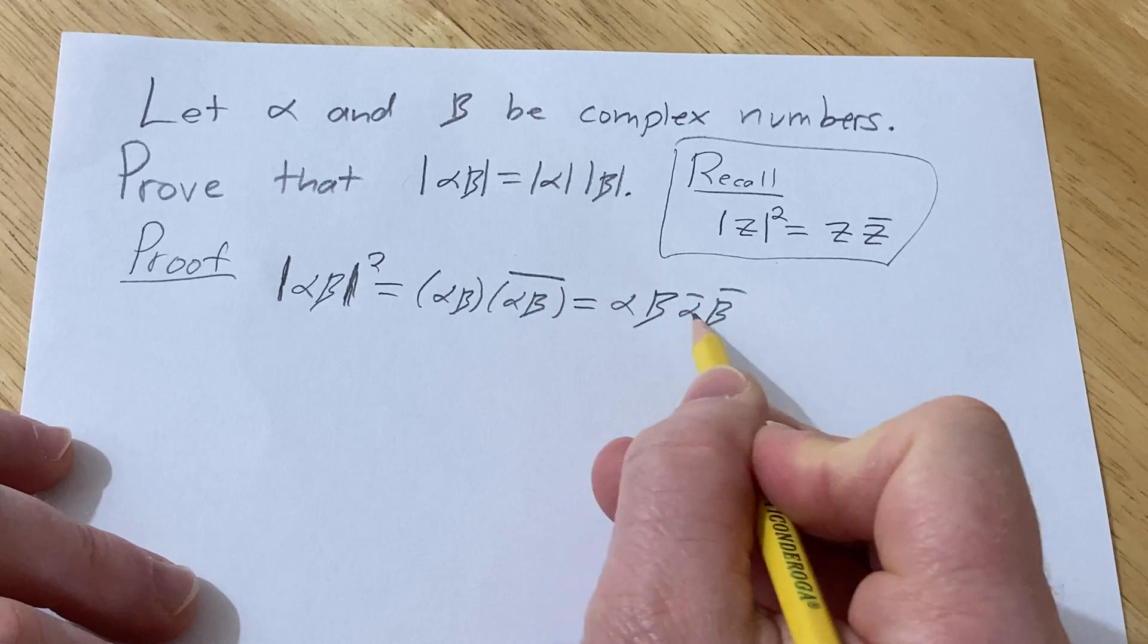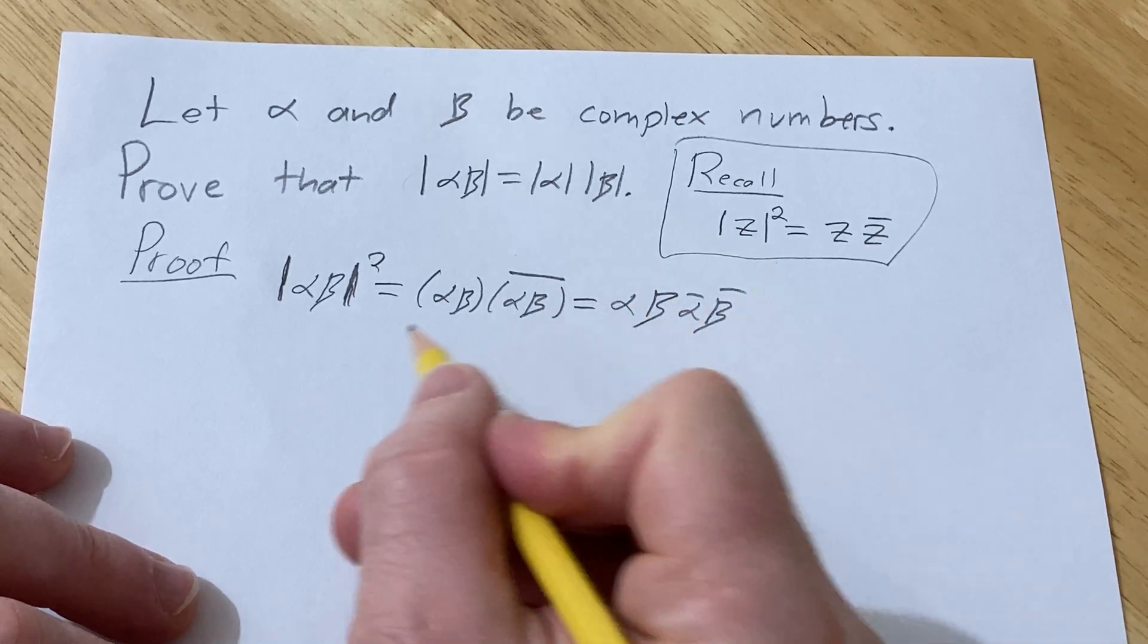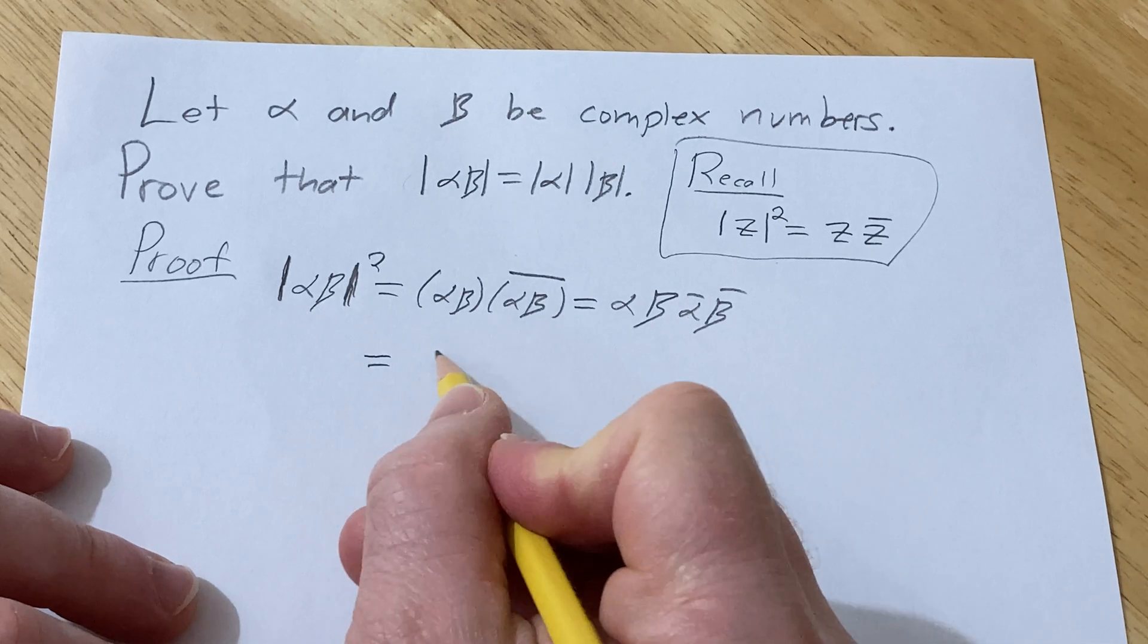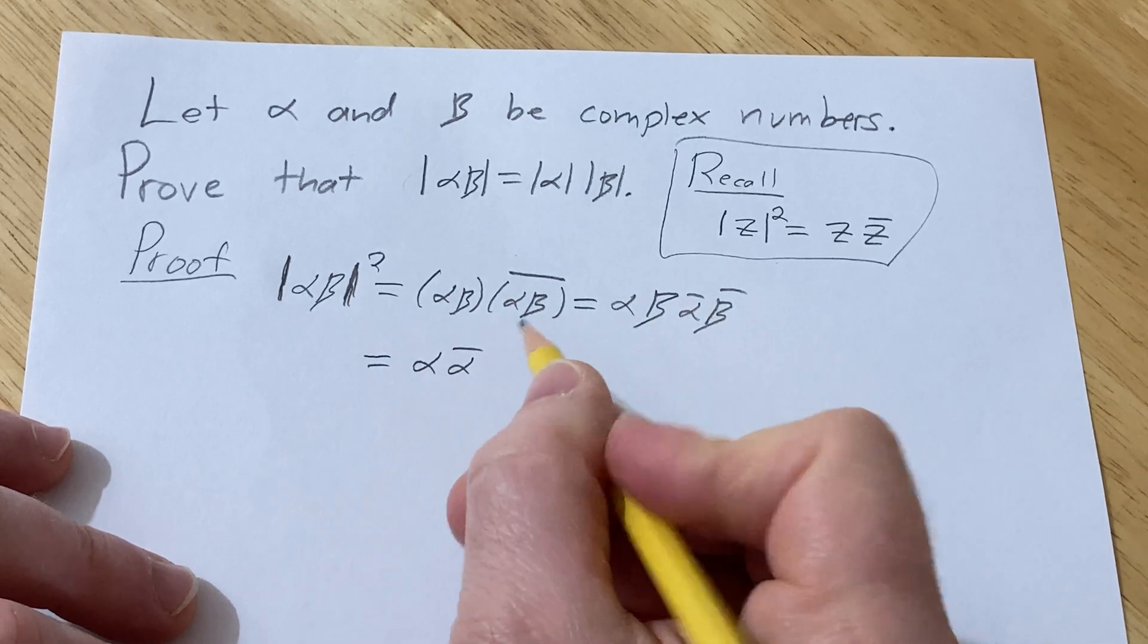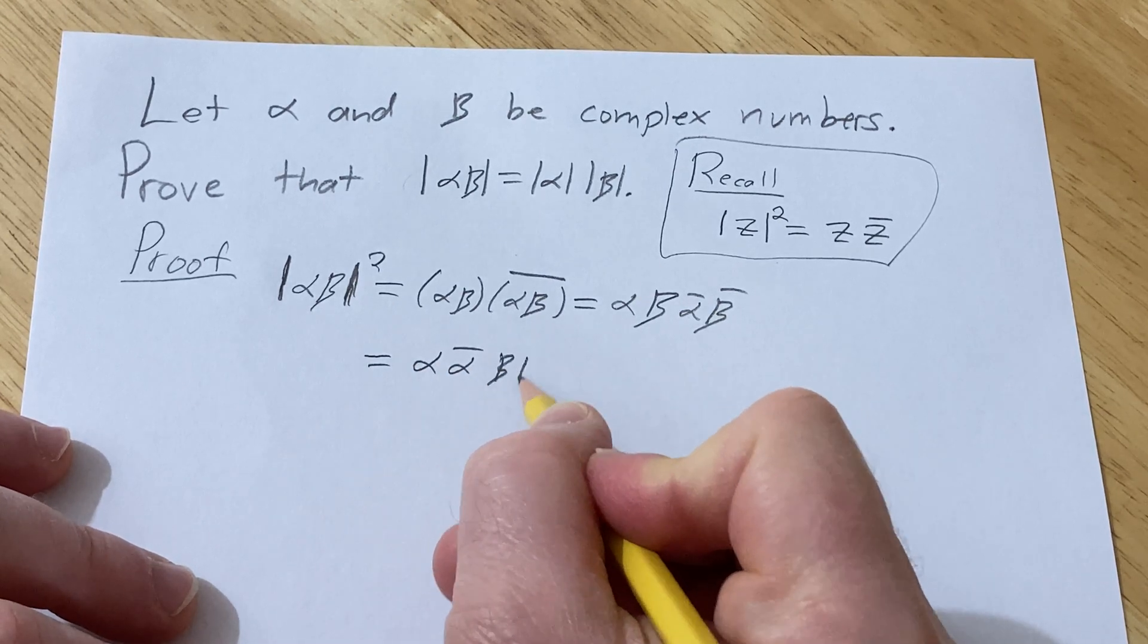And also, multiplication of complex numbers is commutative. So we can take this a step further and write this as alpha times alpha conjugate, beta times beta conjugate.